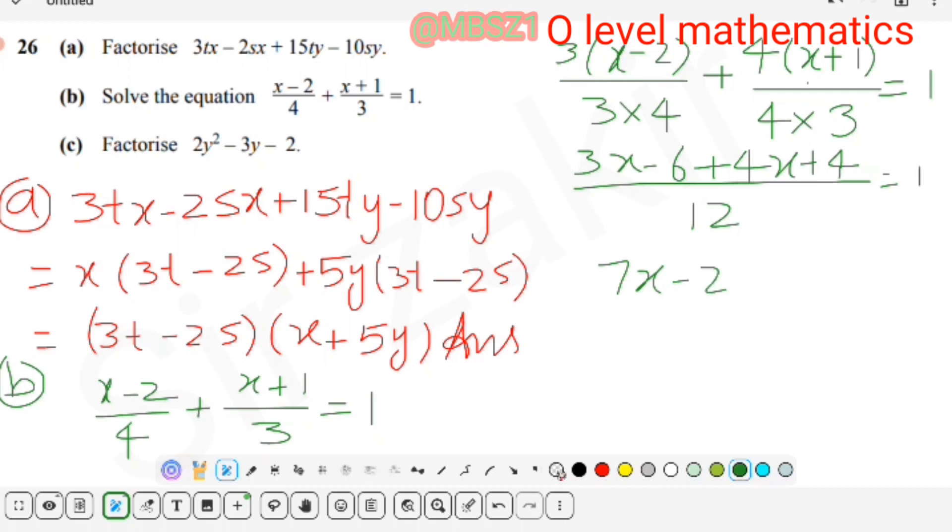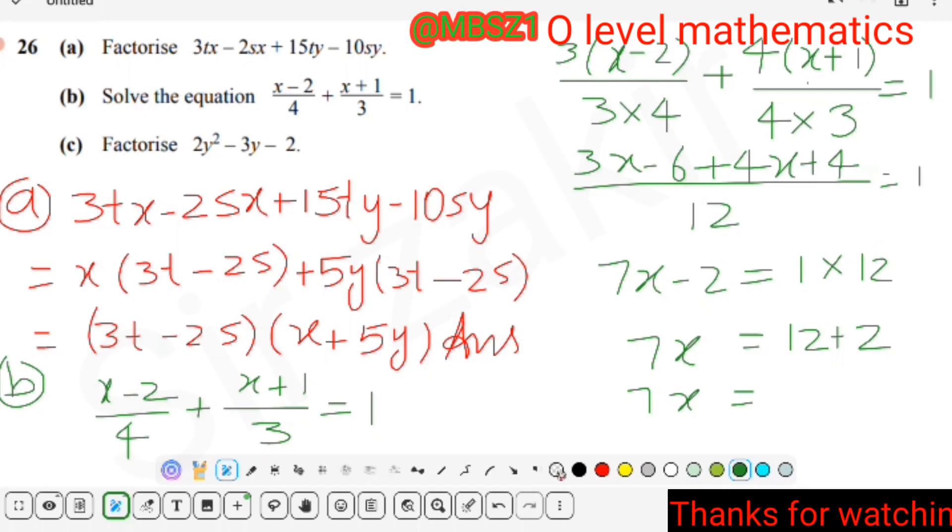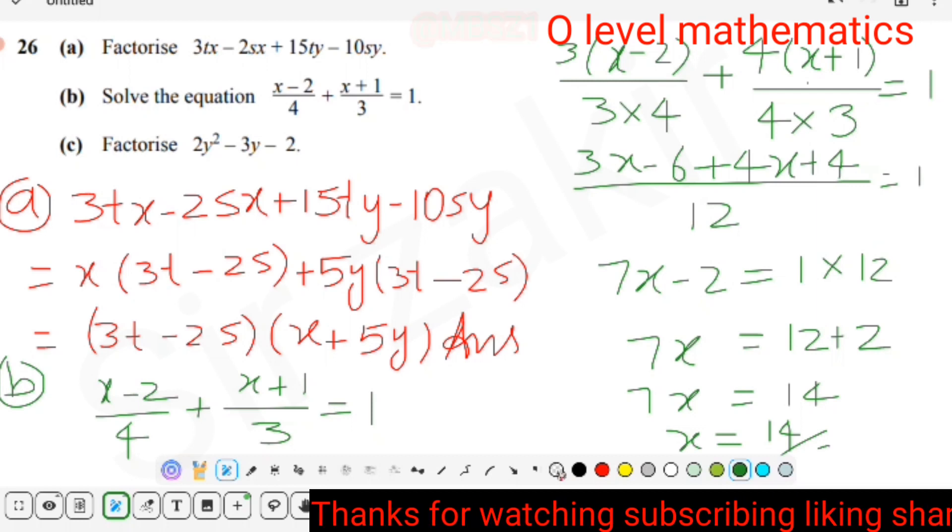Minus 6 plus 4 makes minus 2, and 12 obviously will be on the other side. Now we send this 2, which is with minus sign, it will be added on the right side. So 7X = 14. Then 7 divides 14, and finally 2 is the answer. So the value of X is 2.